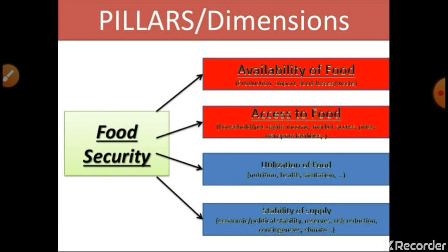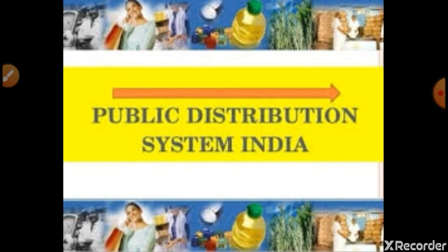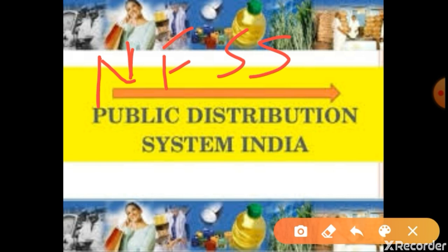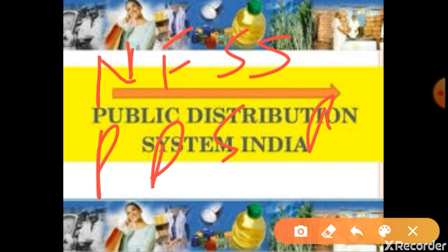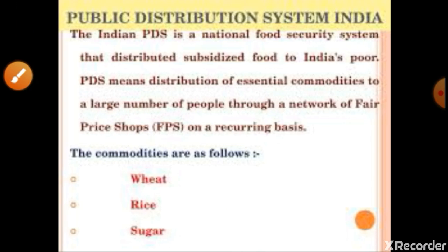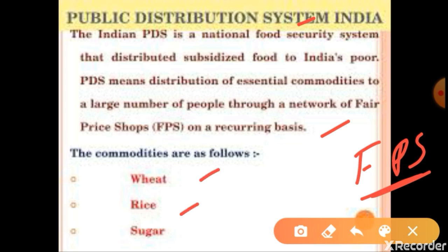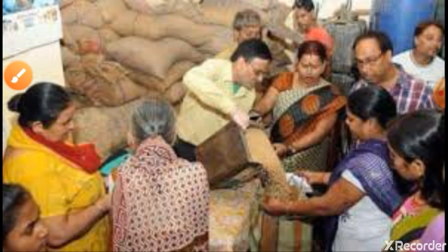The government designed a National Food Security System, which is divided into two parts: PDS and Buffer Stock. The Indian PDS is a national food security system that distributes subsidized food to India's poor, i.e., BPL families. PDS means distribution of essential commodities to a large number of people through a network of fair price shops on a recurring basis. Commodities distributed include wheat, rice, sugar, salt, oil, pulses, etc.